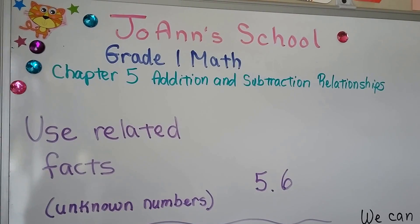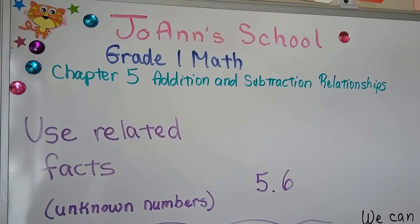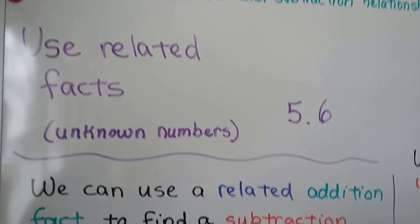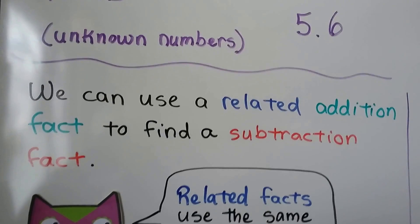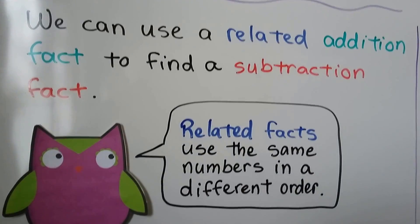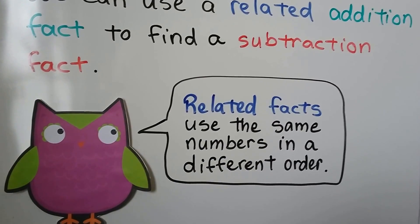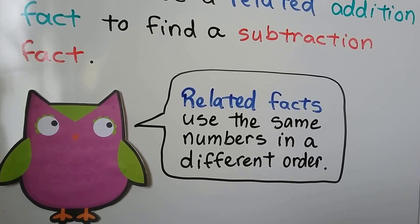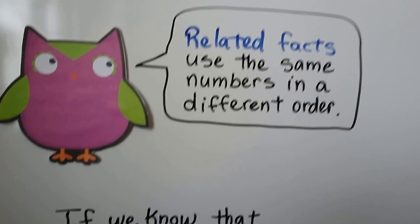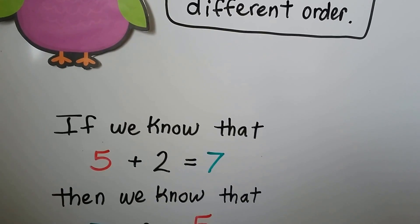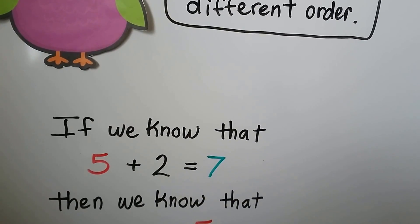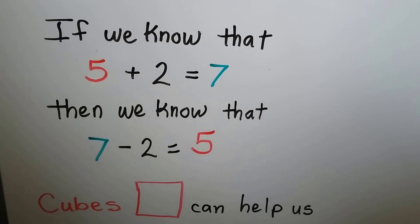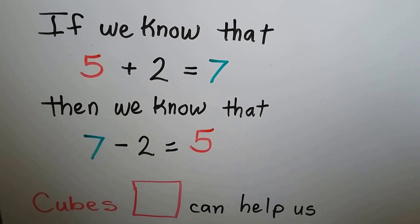This is lesson 5.6 and we're still learning about related facts. We can use a related addition fact to find a subtraction fact. Remember, related facts use the same numbers in a different order. If we know that 5 plus 2 is equal to 7, then we know that 7 minus 2 is equal to 5.